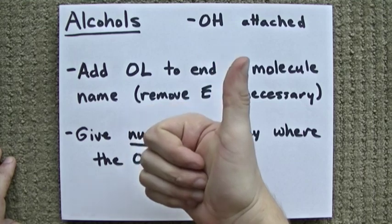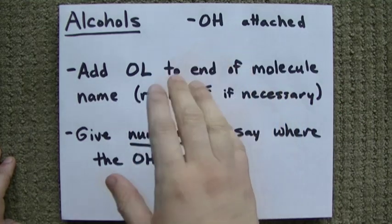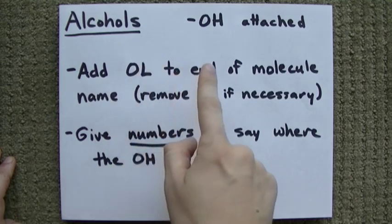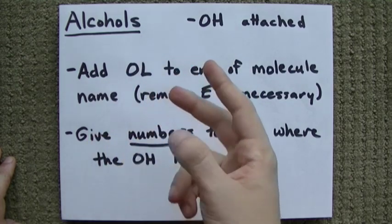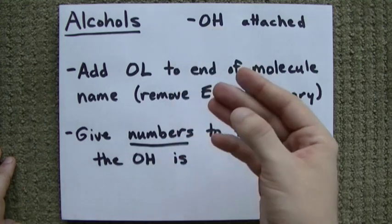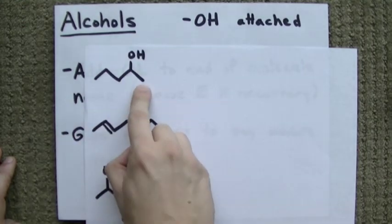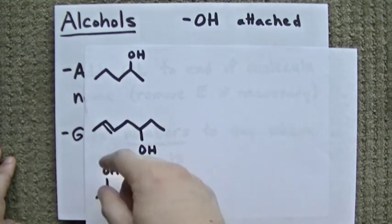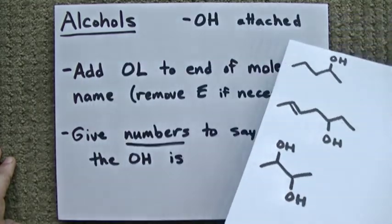You still have to find the longest carbon chain, you still have to name it just as you would any other molecule. But, you add OL to the end, and you have to tell us where the OH group is. In order, I mean, this OH could have been anywhere, could have been on the first one, second one, third one, whatever. You've got to tell us where the OH is, because there are different molecules either way.